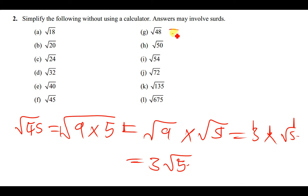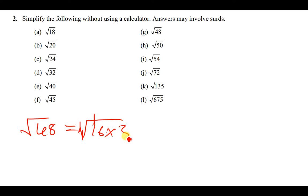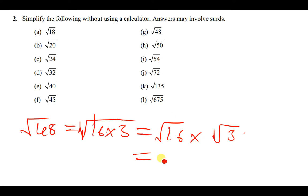For √48: we know 4 can go into 48, but the larger perfect square is 16. So the square root of 48 can also be written as the square root of 16 times 3, which is just the square root of 16 times the square root of 3. The square root of 16 is 4, so the answer is 4√3.